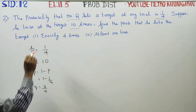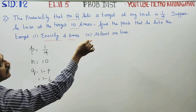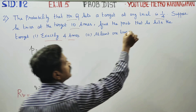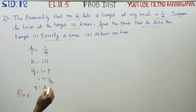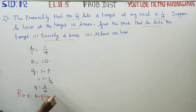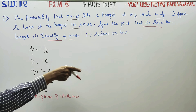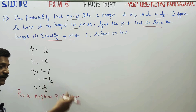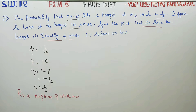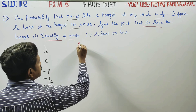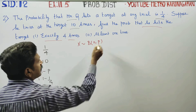That is the number of times Q hits the target. Firing at the target 10 times, the number of hits could be 0 times, 1 time, 2 times, 3 times, 4 times, all the way up to 10 times. This is our random variable. Now, if we have n, P, Q, then we say X follows binomial distribution with parameters n and P.